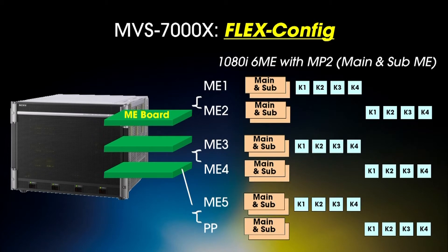Here's an interesting configuration. I've got three boards in the system, each one split in half, so I have six total MEs on the switcher chassis with four keyers on each one. ME1 and 2 have four keyers, 3 and 4 have four keyers, and ME5 is Program Preset. A single panel can only have five physical MEs, but this configuration is perfect for a shared system where you may have two or even three panels on a single processor. I still have the ability to run Multiprogram 2 with main and sub.